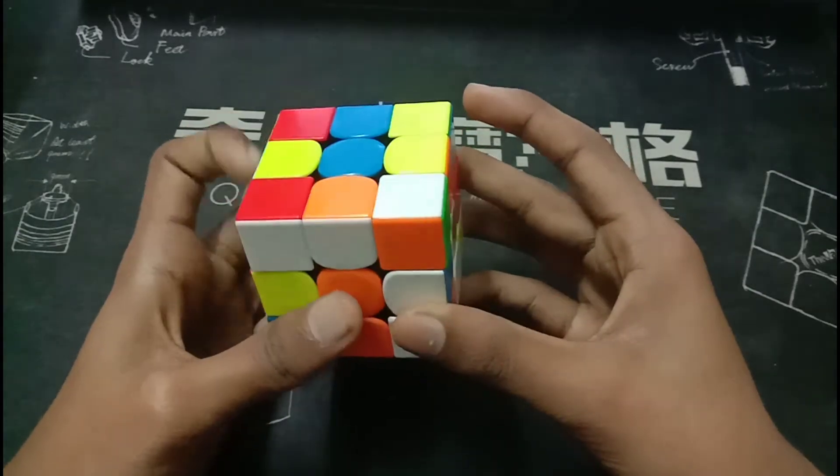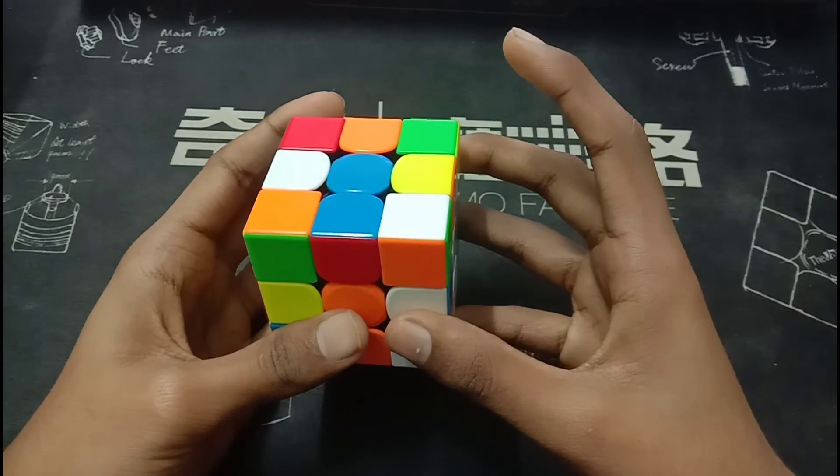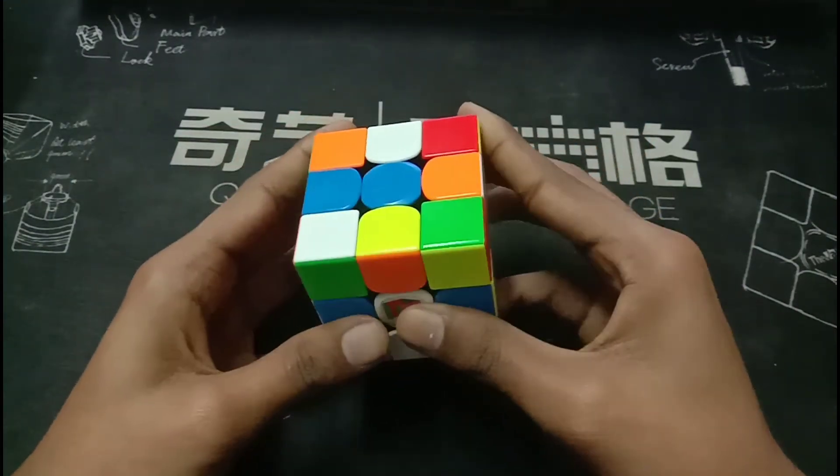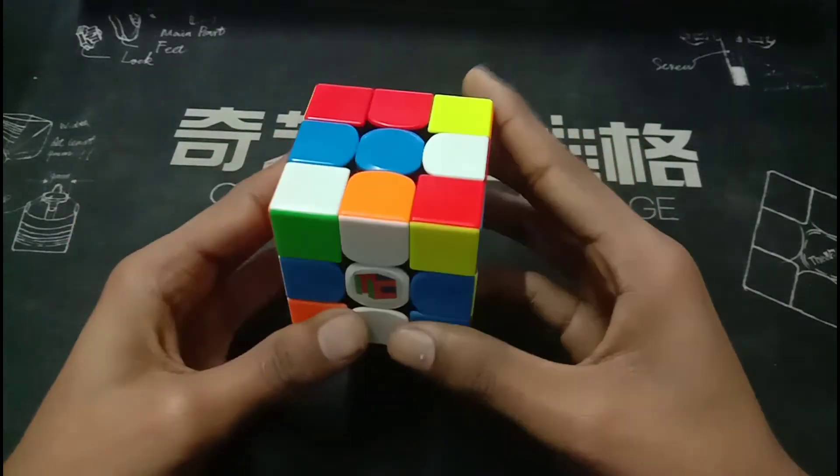For the first pair, he does a U' R' U to R. Then he rotates to insert this pair into the back.